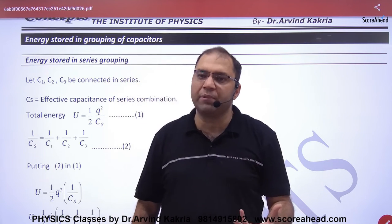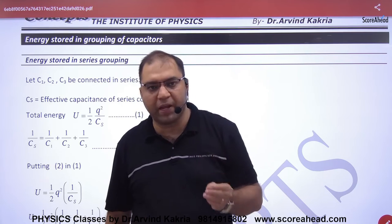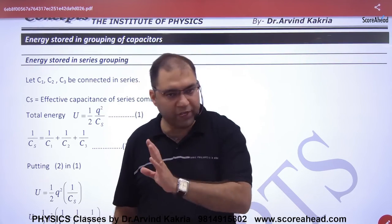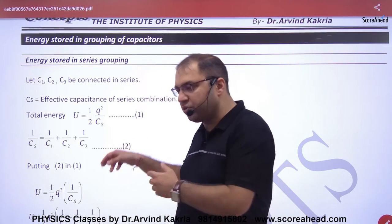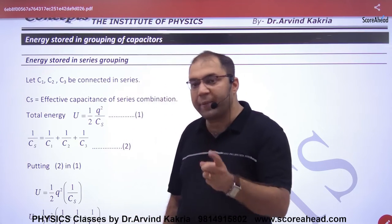So we have three formulas for energy. The first formula was half Q into V. The second formula was half CV squared. And the third formula was half Q squared by C.